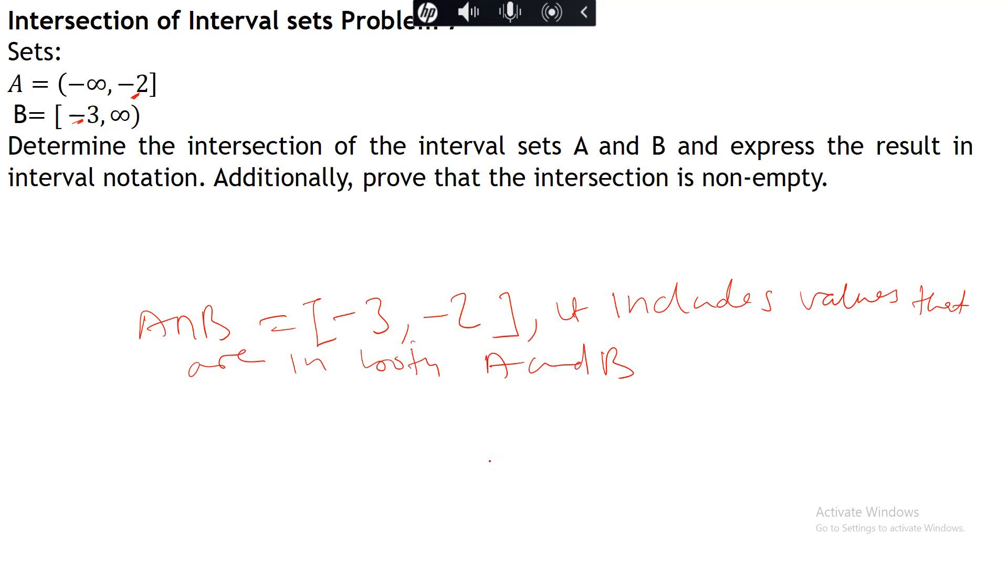Now to prove that the intersection is not empty, all you need to do is consider a value in the interval. Let's look at the value in the interval, let's look at minus 3 to minus 2, such as minus 2.5. Since minus 2.5 is in both A and B, A intersection B is non-empty, because minus 2.5 still falls within this range.